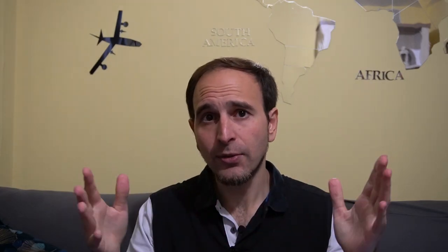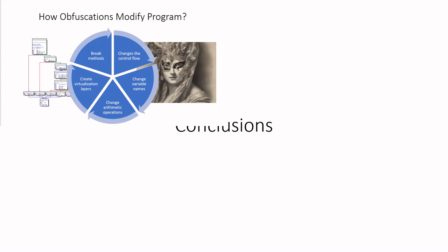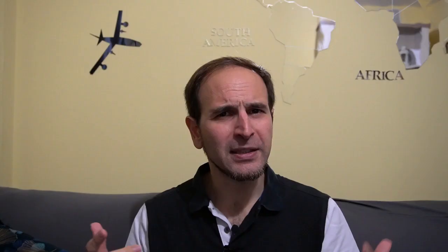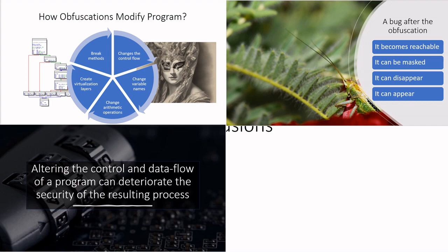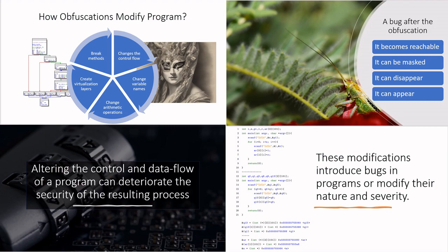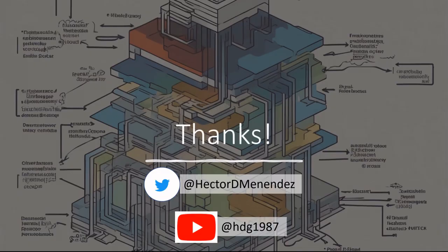To conclude: obfuscating programs is very useful for hiding the program, but in terms of bugs, you have to be very careful because you might be changing their nature. Altering the control and data flow of a program can deteriorate the security of the resulting process, and these modifications introduce bugs or modify their nature and severity. I hope you liked the video. When you use obfuscations, think twice. If you want to check the paper, it's in the comments. Please follow me on Twitter, like the video, and comment if you want me to discuss something else about obfuscations, tools, or anything else. If you can share it, I would really appreciate it. Thank you very much, and see you in the next one!